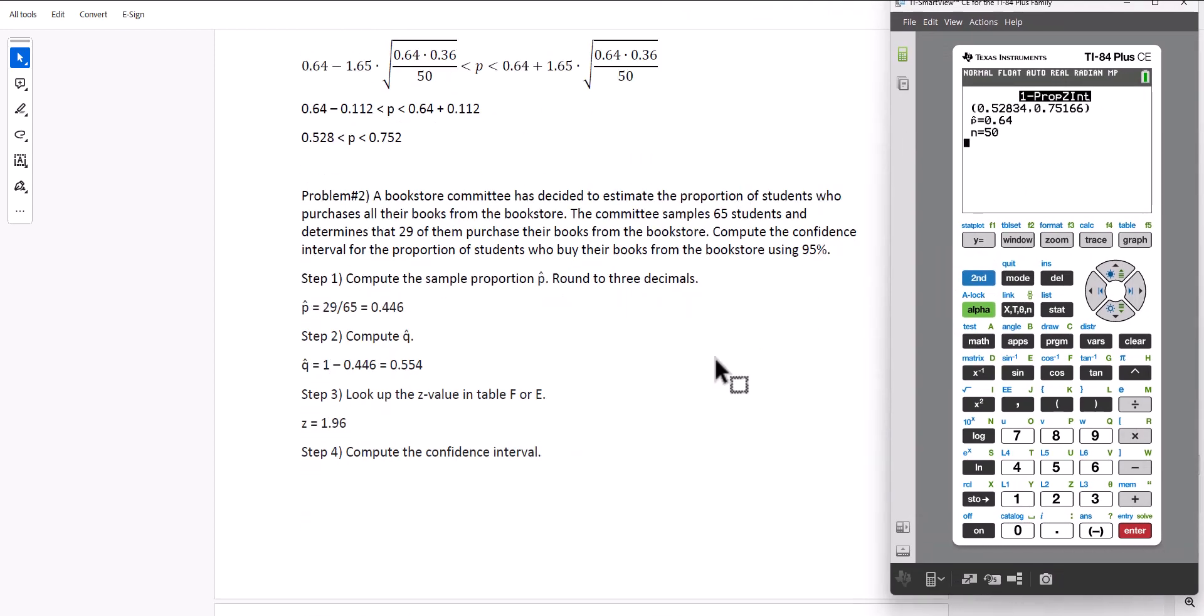The other example says the following. A bookstore committee has decided to estimate the proportion of students who purchase all their books from the bookstore. Compute the confidence interval for the proportion of students who buy their books using 95% confidence level.